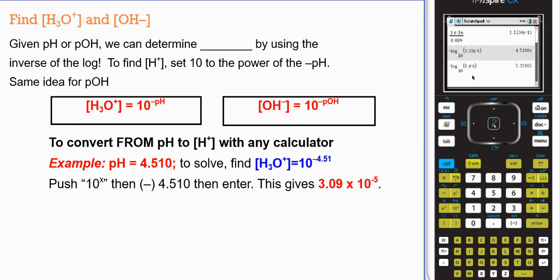Given pH or pOH, we can also find concentration by using the inverse of the log. So this is basically doing the backwards of the negative log, doing the reverse of the negative log. To find hydrogen ion concentration, set 10 to the power of negative pH and the same is true for the pOH. So our hydrogen ion concentration will be equal to 10 raised to the power of negative pH and hydroxide 10 to the negative pOH.